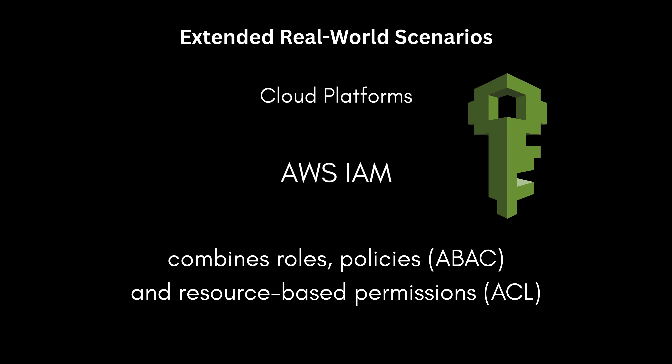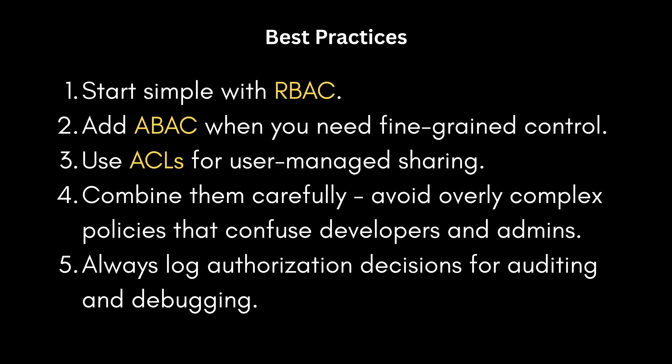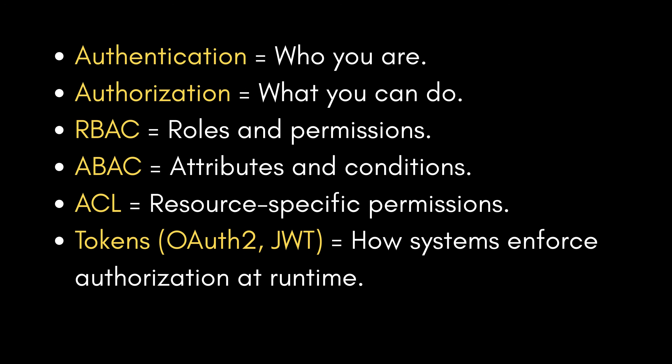Real-world systems almost never rely on just one model — they blend them for a robust, adaptable security framework. Best practices: start simple with RBAC for a clear, manageable foundation; introduce ABAC when you need fine-grained, dynamic control; and use ACLs for user-managed sharing of specific resources. Combine these models carefully and avoid overly complex policies that become impossible to understand. Always log your authorization decisions — this is critical for auditing, security events, and debugging access issues.